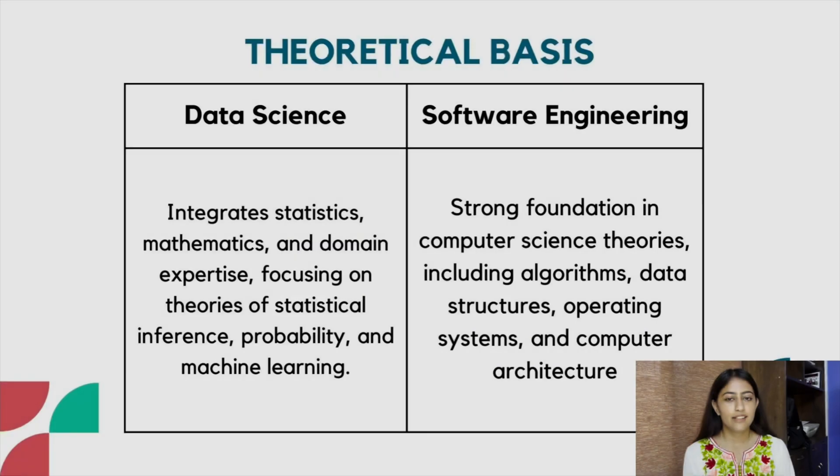Let's start with the definitions. Software engineering is the branch of computer science that deals with the design, development, testing and maintenance of software applications. Data science, on the other hand, is the study and research of data to find meaningful insights in the world of business. Let's now discuss how these two fields are theoretically different.